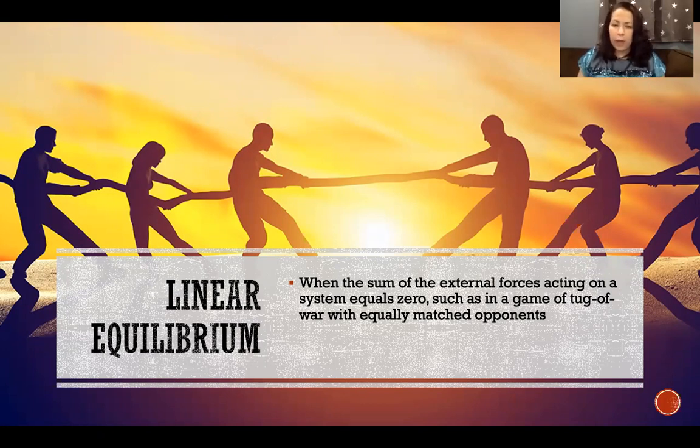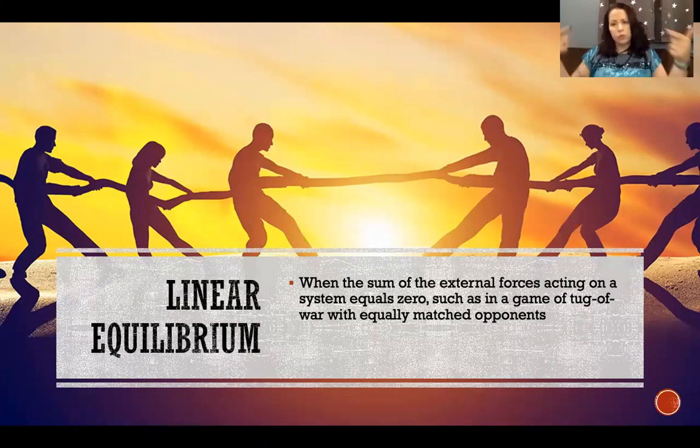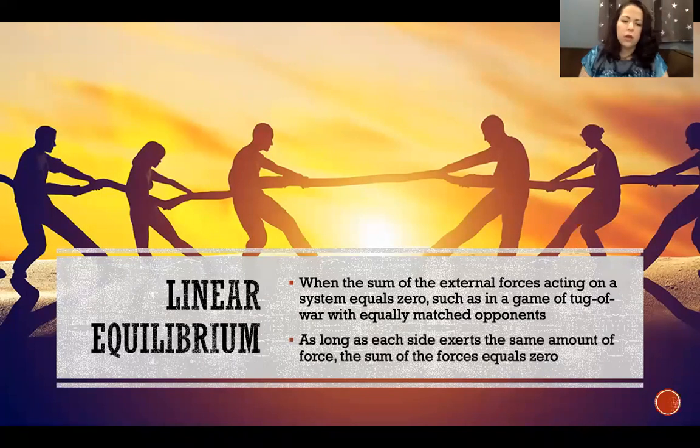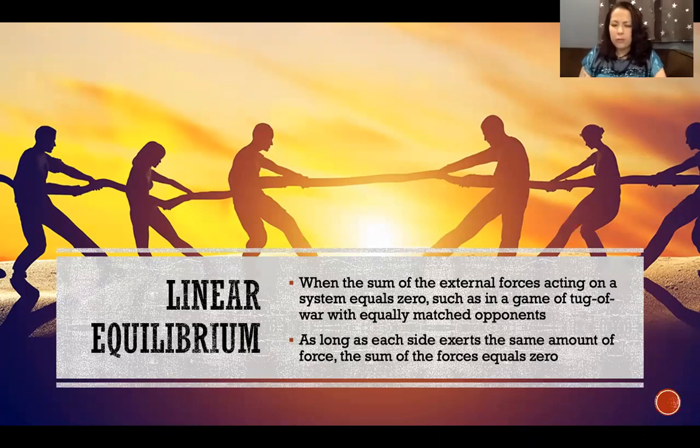The direction is opposite, but the forces are collinear, meaning the forces are happening in the same line of action. As long as each side exerts the same amount of force, the sum of the forces equals zero.